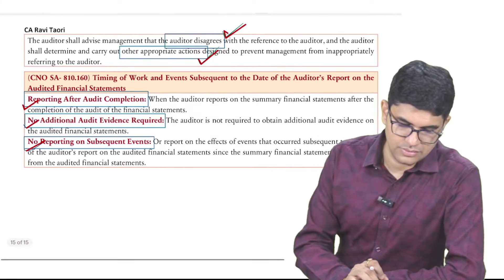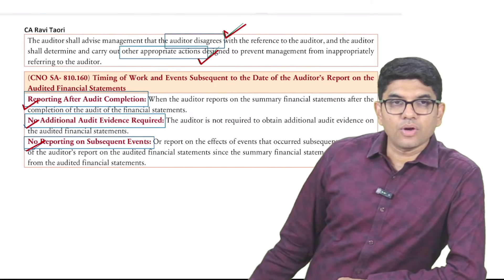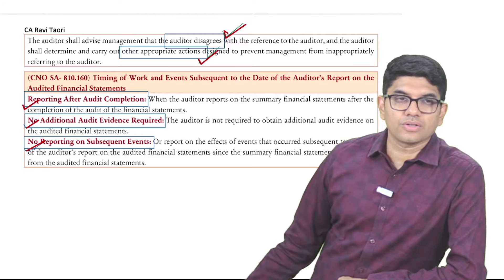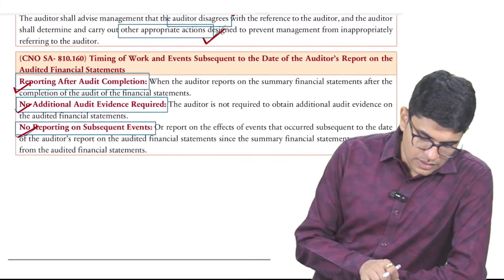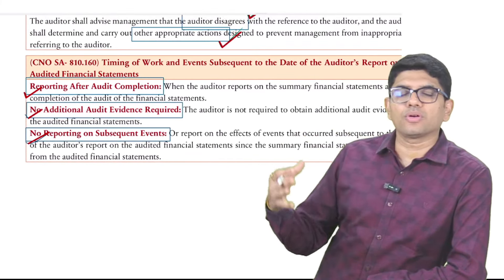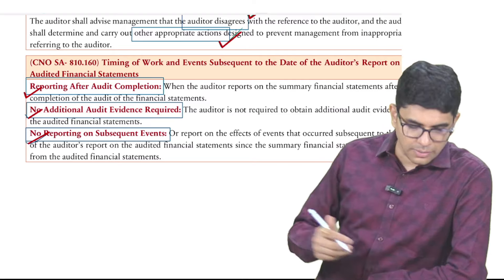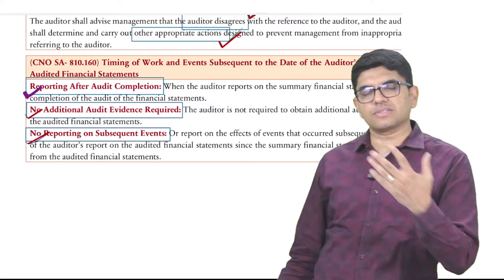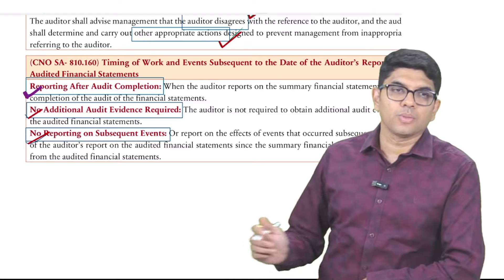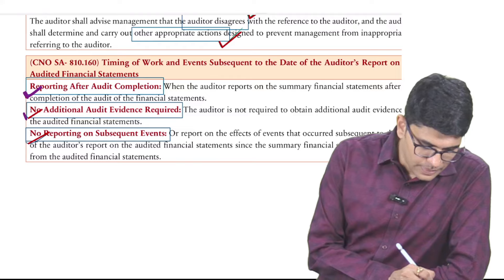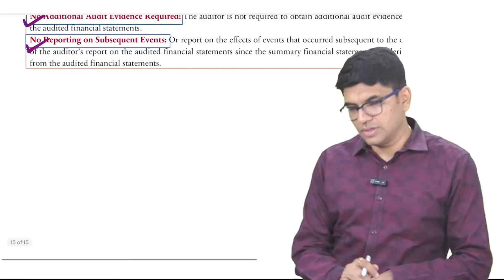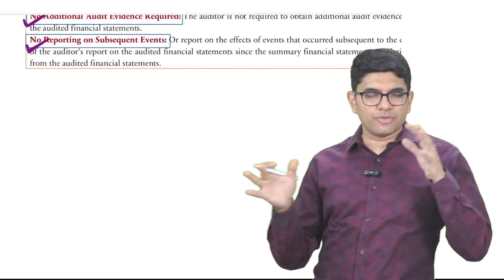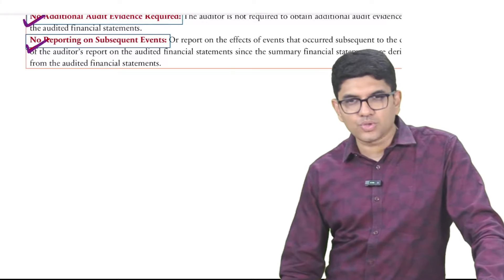If management has not appointed an auditor for audit of summary financial statements, it should not be directly or indirectly inferred that summary financial statements are audited or examined in any manner. If the message seems like that, go to management and say: do not use our name with the summary financial statements when we are not doing the audit — you can appoint us and we will do it. If management refuses, the auditor will go and tell everyone that they have not done the audit of summary financial statements. Timing: we are supposed to report once the complete audit is over, summary is prepared, acceptance is there, audit is done, and no additional evidence is required. We do not check subsequent events for summary financial statements. This was the portion covered today; the rest will be covered tomorrow.